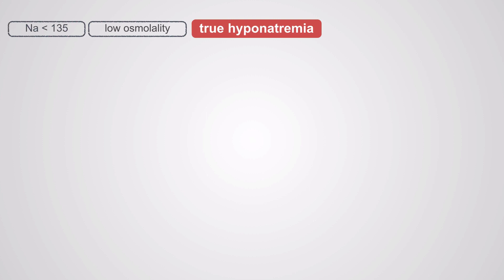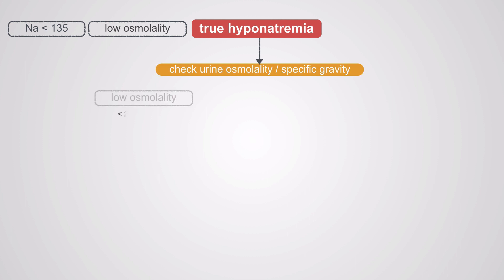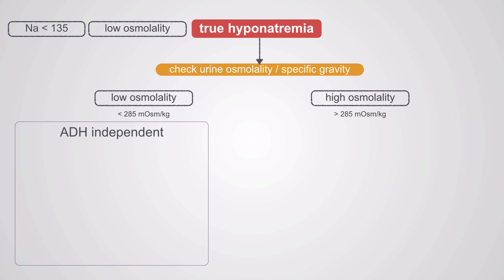Driving down into true hyponatremia, the next step is to check the urine osmolality or urine specific gravity. What we're trying to determine is whether there is significant ADH activity. You can think of urine osmolality as being an ADH dipstick. If there is low urine osmolality — the lower, the more accurate — you're going to have ADH-independent disease.